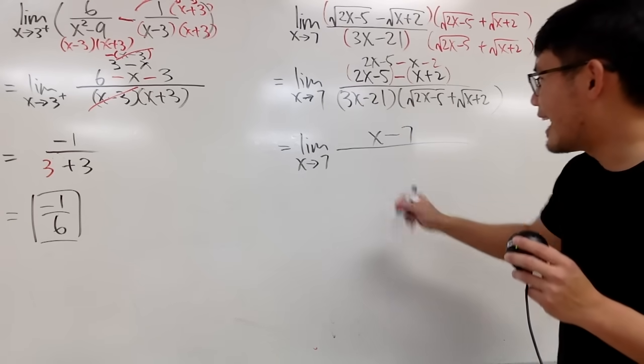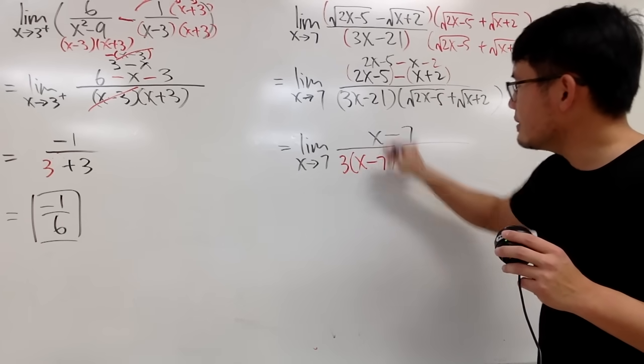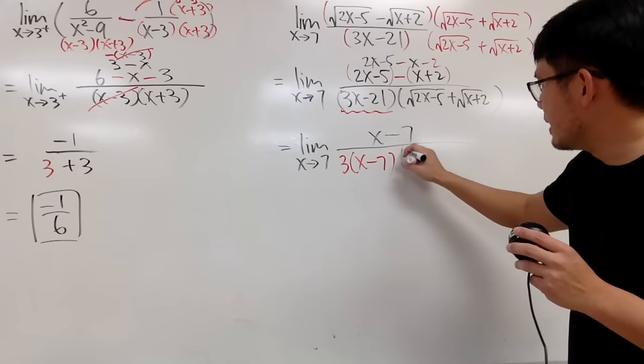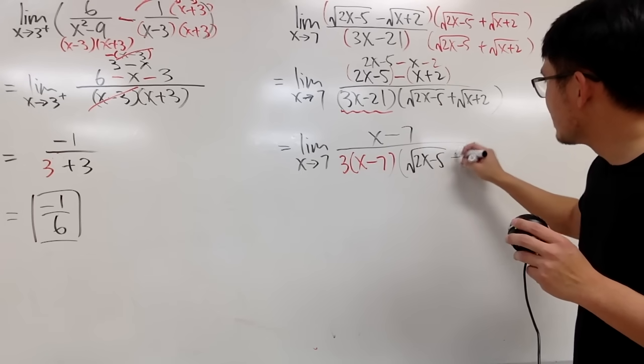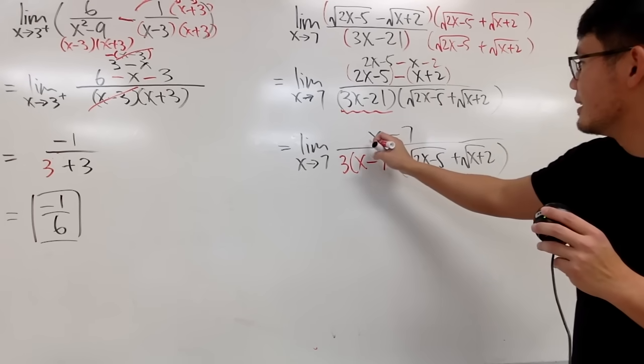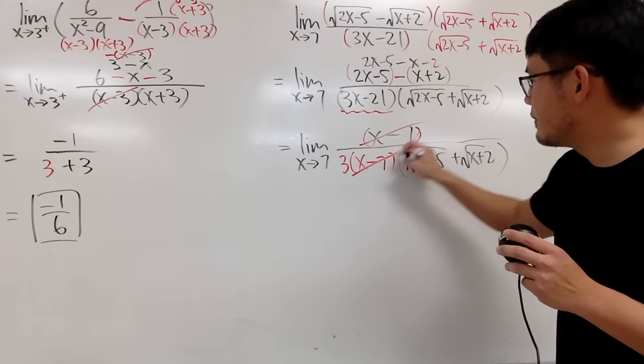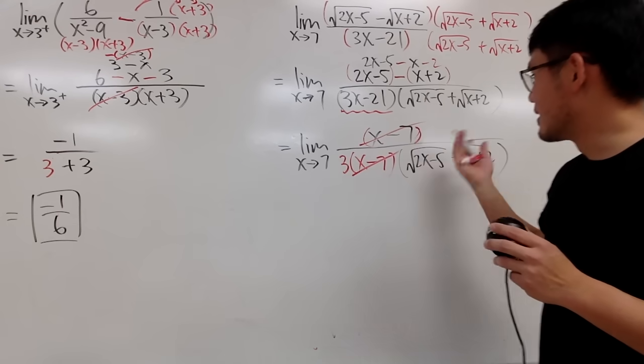So, of course, we'll do that. Let me factor out the 3 right here. We get 3 times x minus 7 from here. And this right here, I'll just keep it as how it is again, which is square root of 2x minus 5 plus square root of x plus 2. And then, you see, on the top, this factor can be cancelled out with this factor. So, this is pretty much it, the simplification-wise.